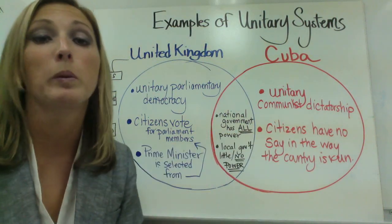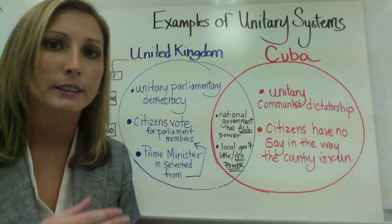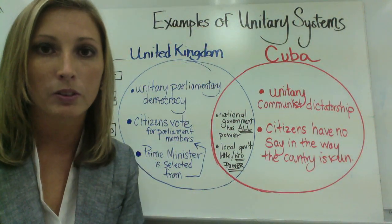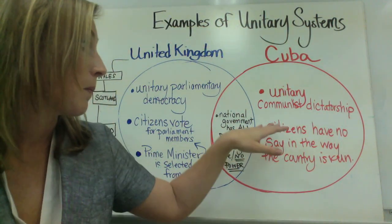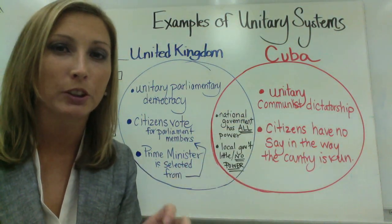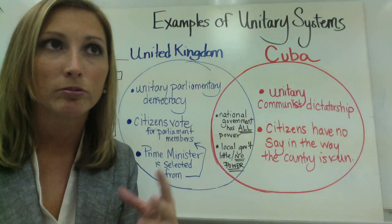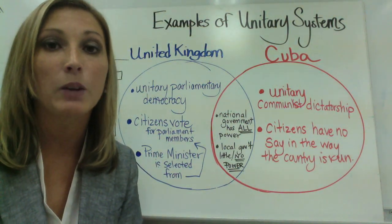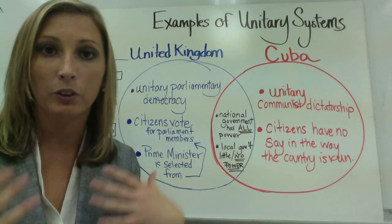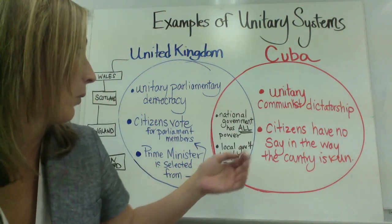Dictatorship will be broken down in the lecture on types of government, but a dictatorship is typically run by someone who has elected themselves. Fidel Castro often goes by President Castro, which is misleading in the sense that he was not voted in democratically, which is what someone under a democracy would envision of how he would come to power.